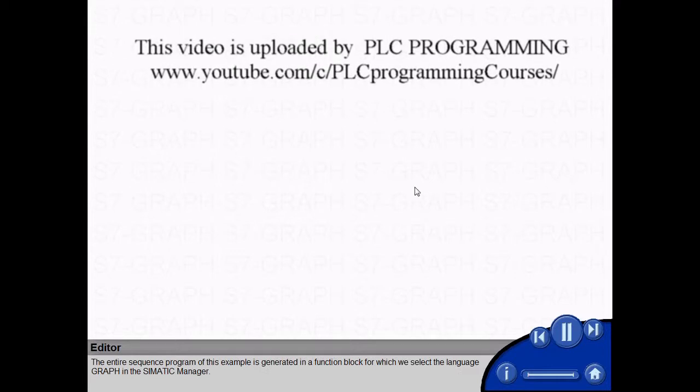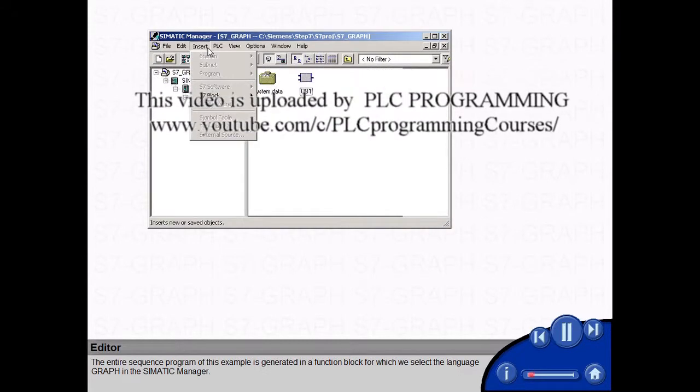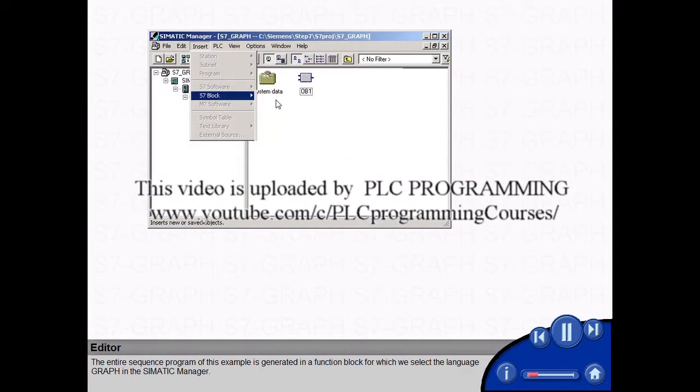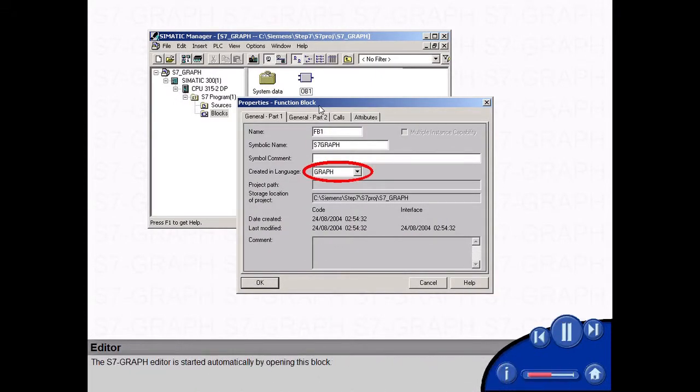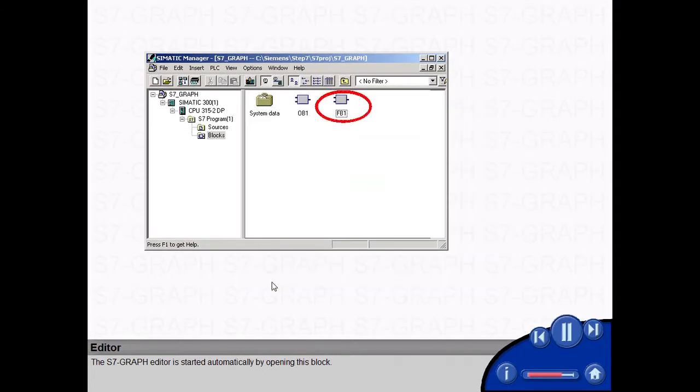The entire sequence program of this example is generated in a function block for which we select the language Graph in the Simatic Manager. The S7 Graph editor is started automatically by opening this block.